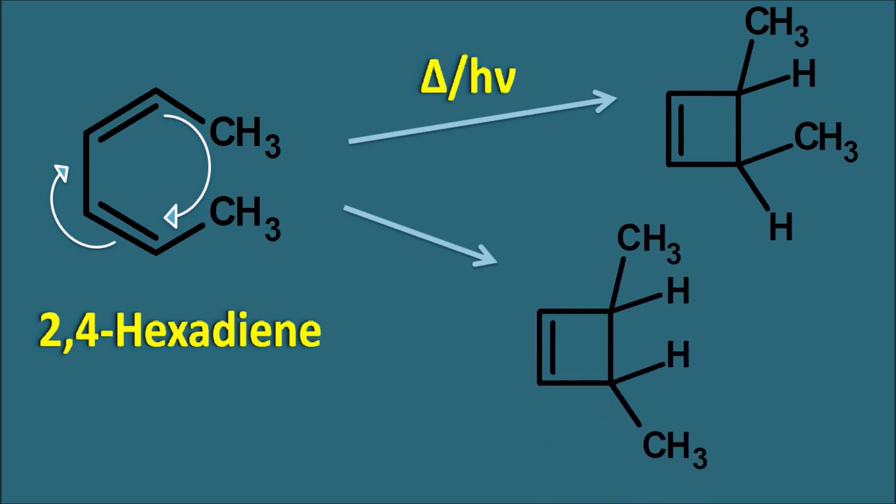Both structures have similar connectivity but the methyl groups are arranged in different ways. In the first one, the methyl groups are on the same side, so this is the cis isomer. In the second one, the methyl groups are on the opposite side, so it is a trans isomer. So how can we know whether this reaction produces the cis isomer or the trans isomer as the product?